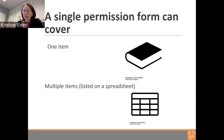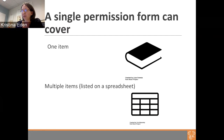With one single permission form, you can cover one item or many. When working with an institution, they generally send a spreadsheet and say 'see attached.' You can use a single permission form as long as the same CC license applies to everything. If you want different batches under different CC licenses, you'd need a separate form for each batch. There is absolutely no need to send in a separate form for every single book — you can combine them all.